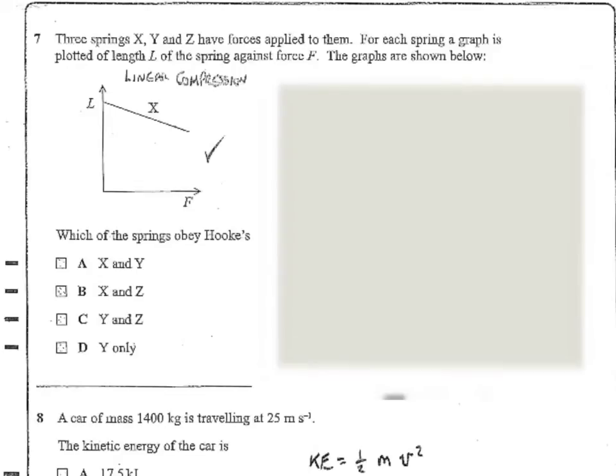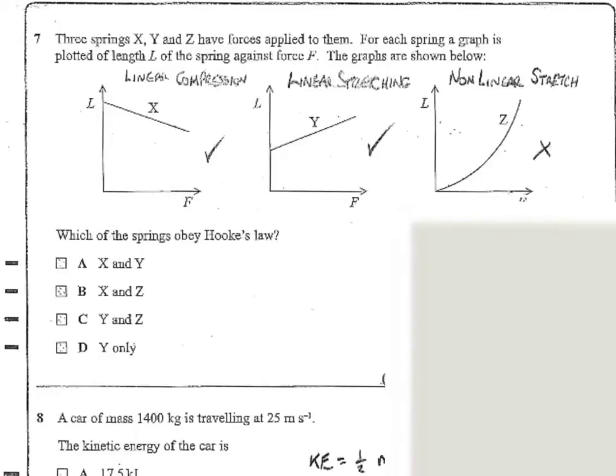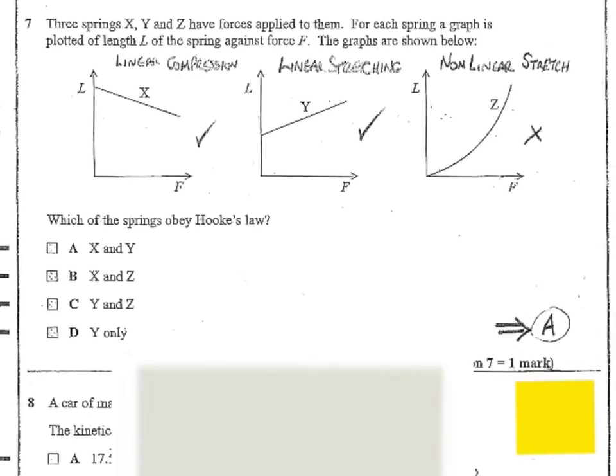The next one is linear stretching and again nice straight line. So this is what happens when you stretch a spring. Its length gets longer and it follows a straight line. The third one is a stretching but it's a non-linear and some materials do this but they're not obeying Hooke's Law. So we've got linear, linear and not linear. So this is true, this is true and this isn't true. So we're looking for an option that gives us X and Y as the options. So the answer here is A.